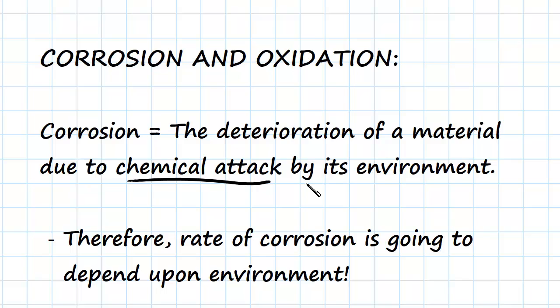So that's going to range across a whole lot of effects — the type of environment, the temperature. For example, a sea environment with the amount of salt in the air is going to lead to quick corrosion. But we're going to have a look at the different kinds of environments and their specific corrosive effects later.